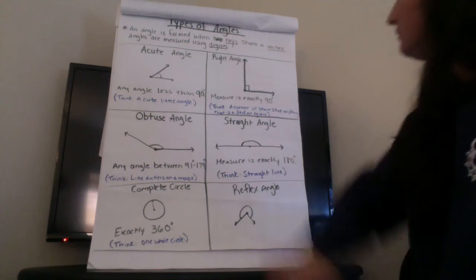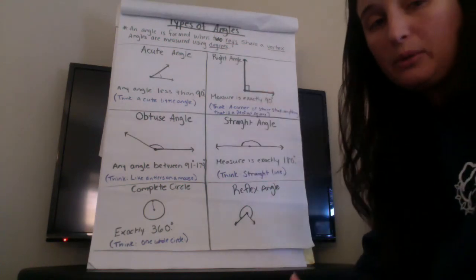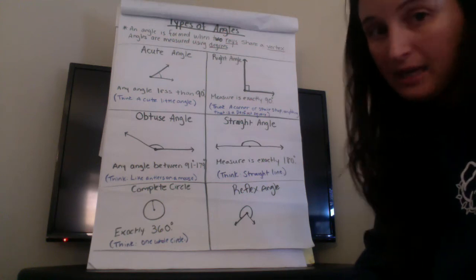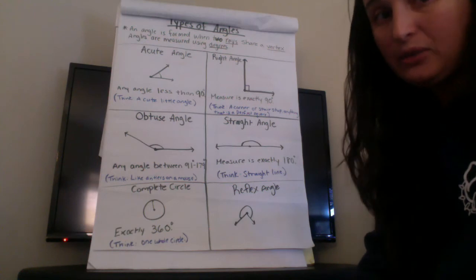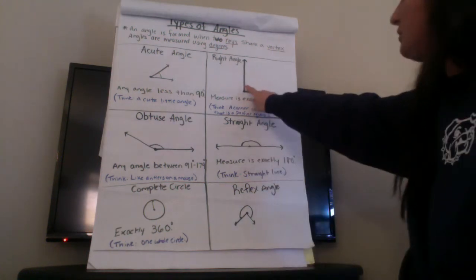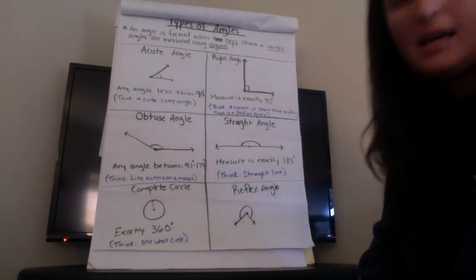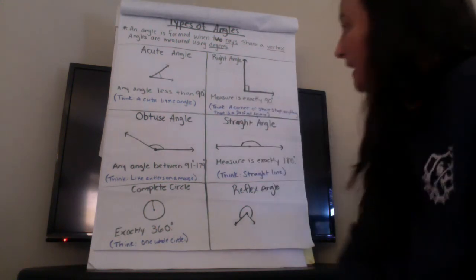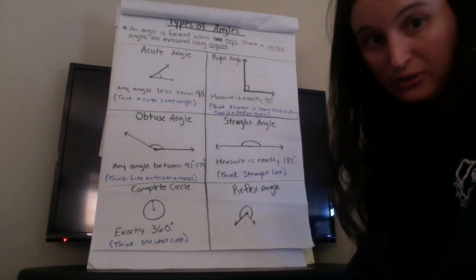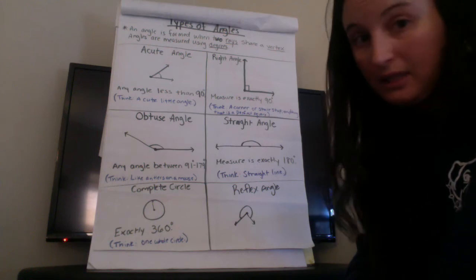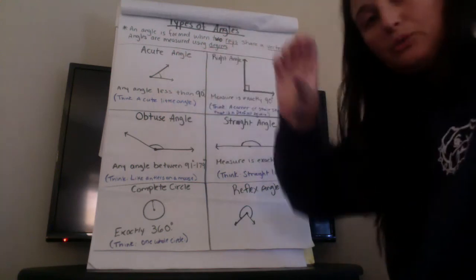A 90 degree angle is a right angle so a right angle is always exactly 90 degrees, not 89 degrees not 91 degrees, exactly 90 degrees and you can tell when an angle is 90 degrees because usually it has this little square. So you want to think of a right angle as like a perfect square. So anything less than 90 degrees you would call it an acute angle even if it's 89 degrees even if it's 74 degrees it's an acute angle because it's less than 90 degrees. So think of it like a cute little angle.